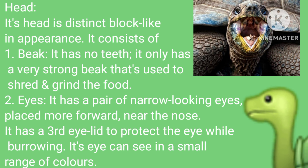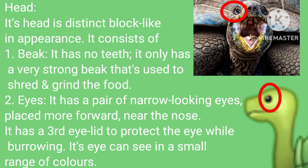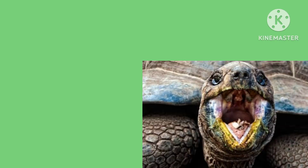Head: its head is distinct and block-like in appearance. It consists of a beak, eyes, naris, and ears. Beak: it has no teeth; it only has a very strong beak that is used to shred and grind food. Eyes: it has a pair of narrow-looking eyes placed more forward, near the nose.